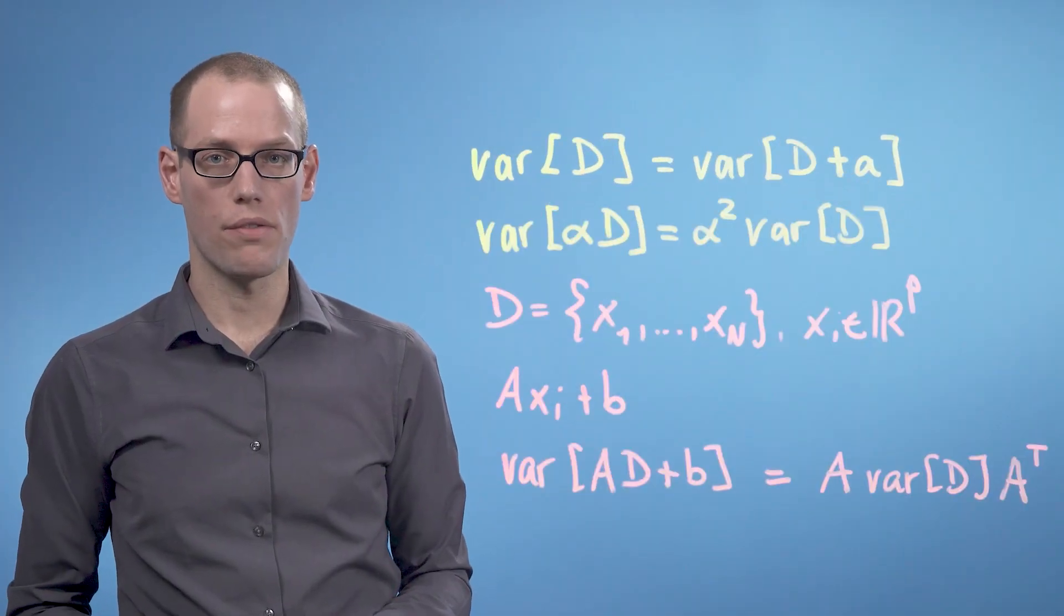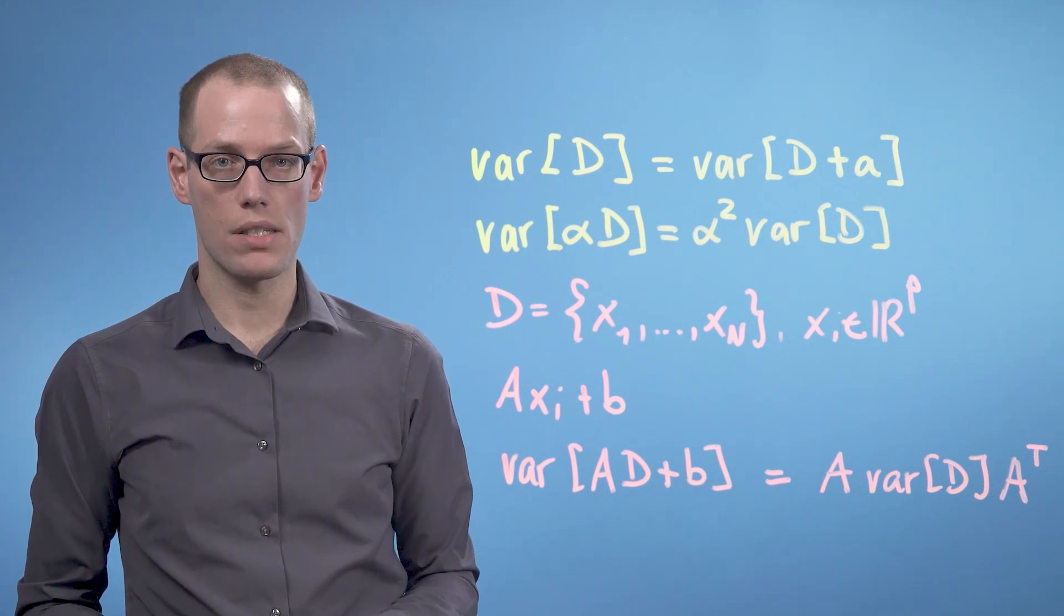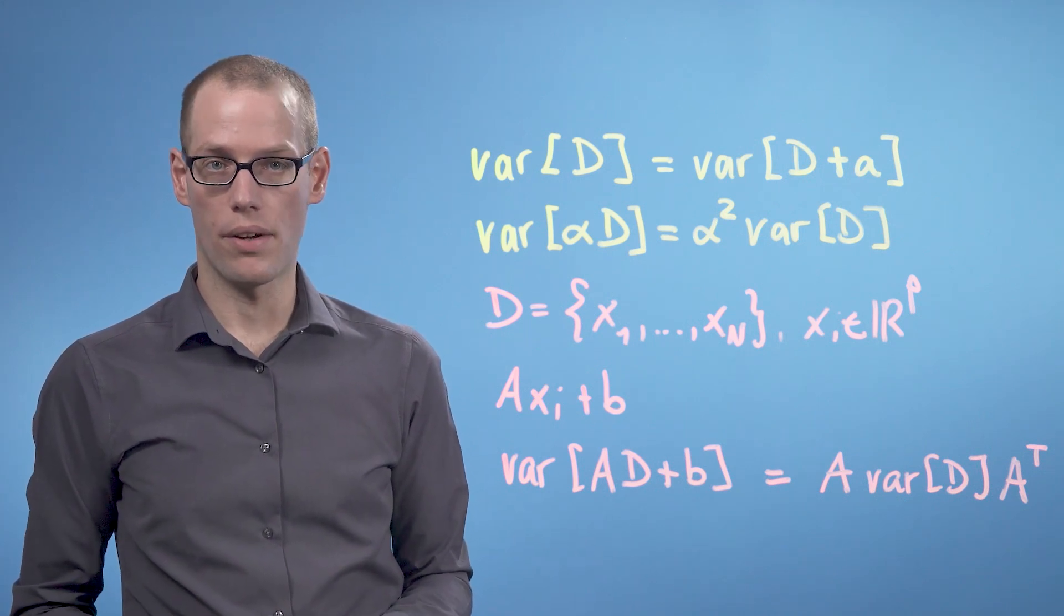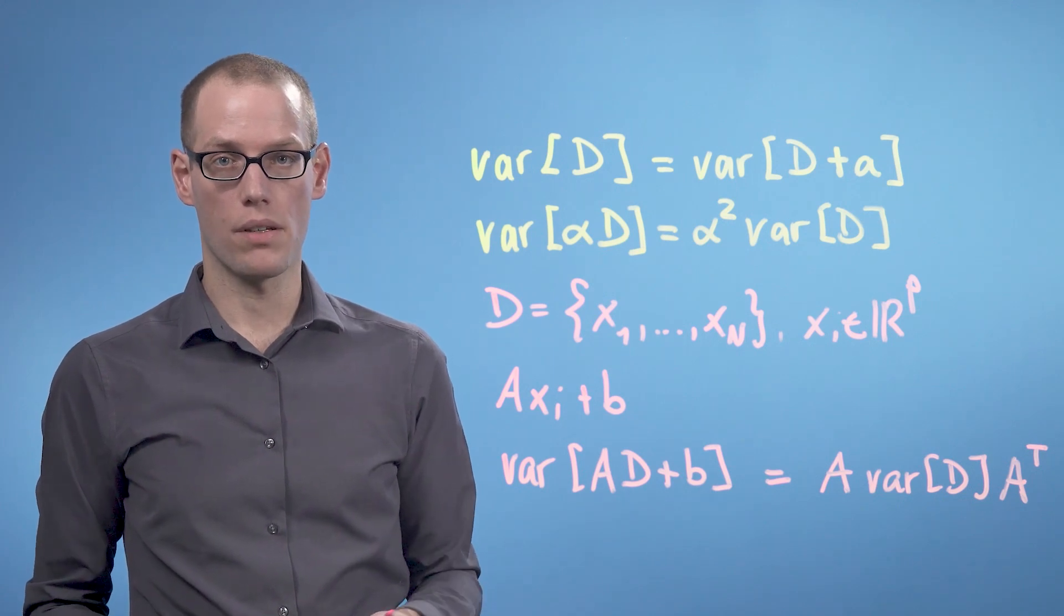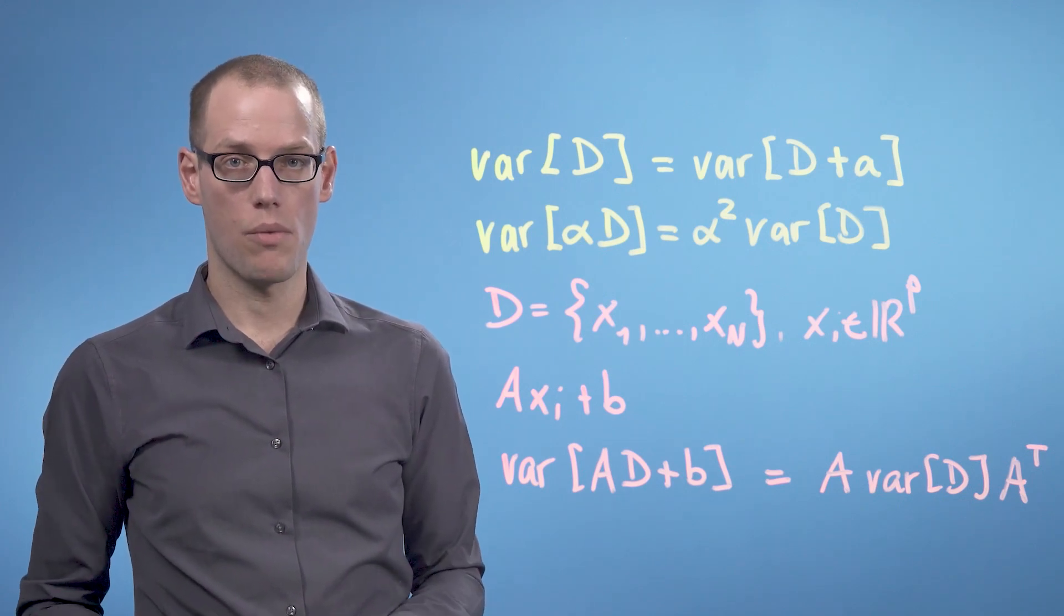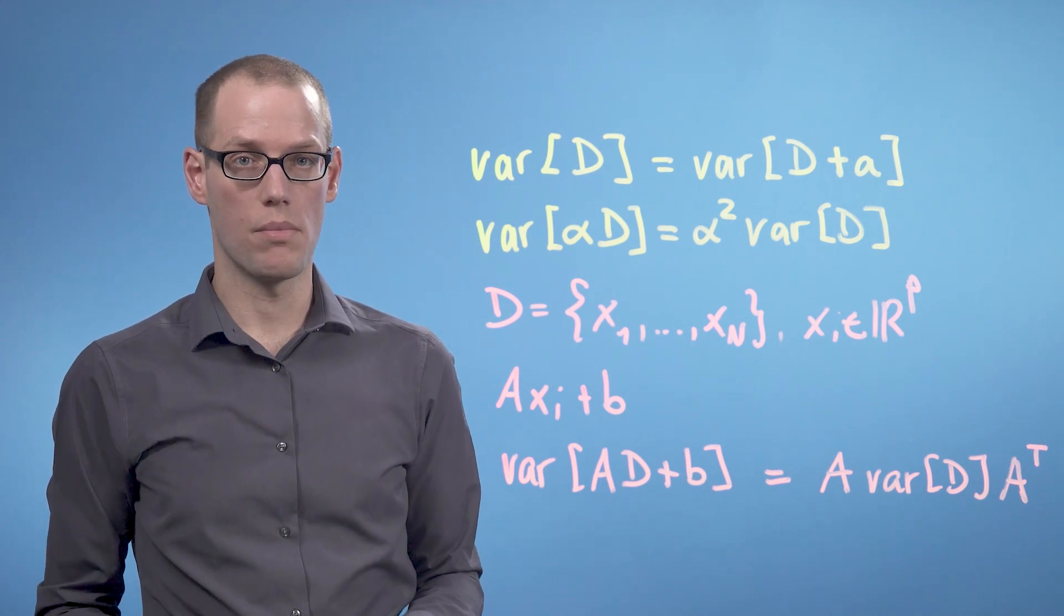In this video, we saw what effects a linear transformation of a data set has on the mean and the variance. In particular, we saw that shifting data has only an effect on the mean but not the variance, while scaling the data affects both the mean and the variance.